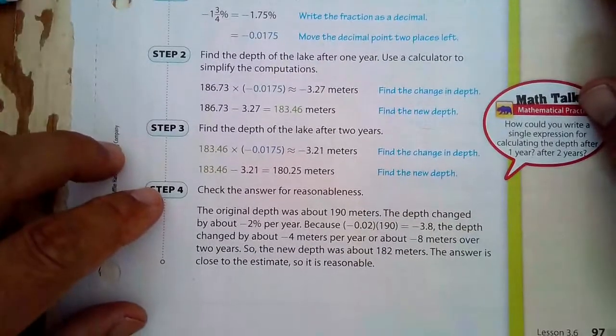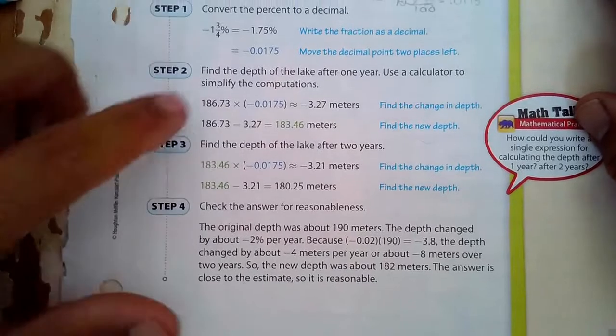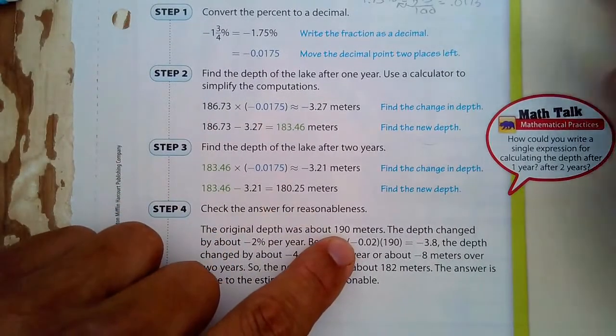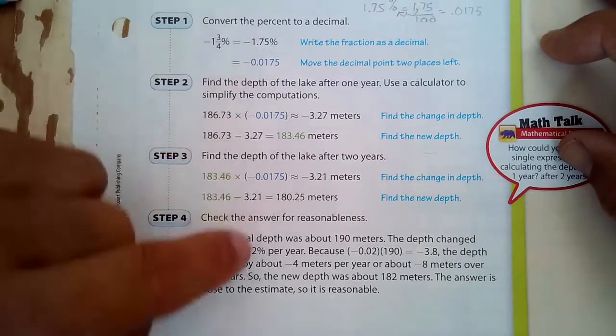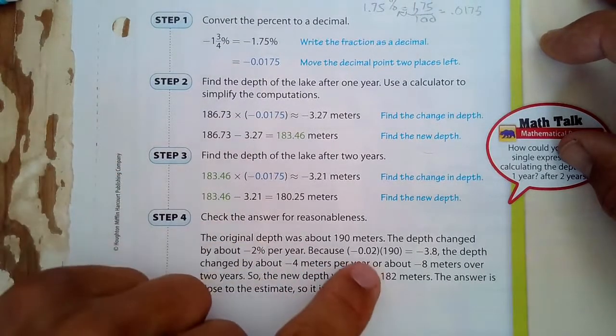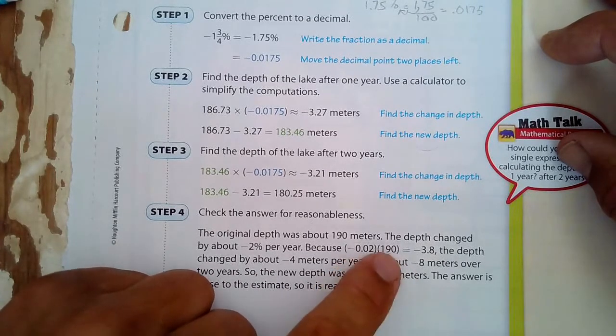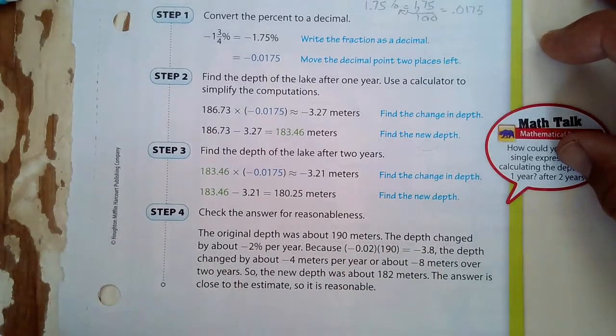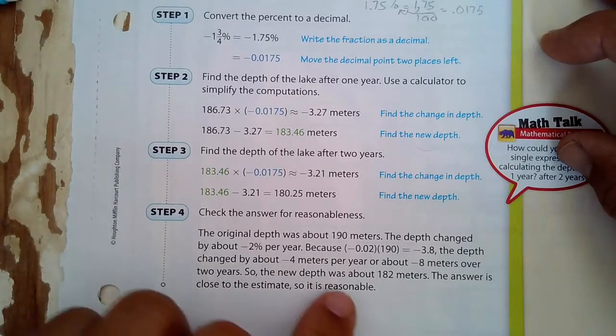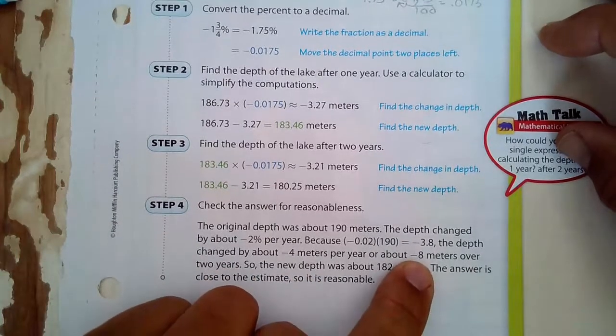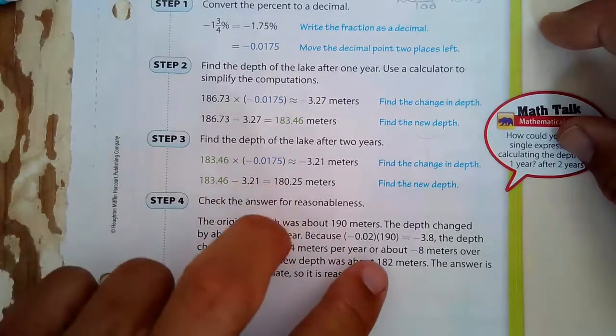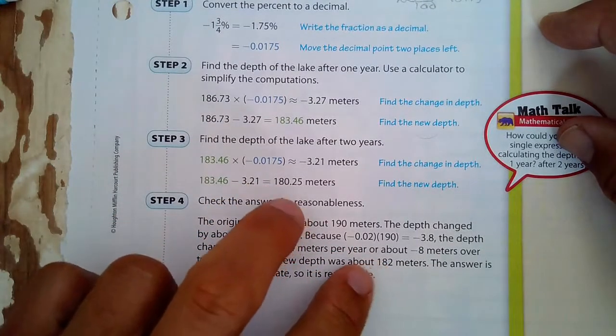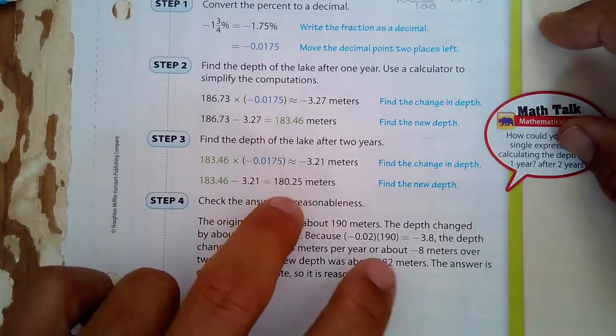So check your answer for reasonableness. We're going to be rounding numbers here. Instead of 186.73, we're going to call it 190 because it's easier to work with. And it changed about 2% because 1.75, that's pretty close. It's closer to 2% than 1%. And 2% of 190, 0.02 times 190 is 3.8, and that's about 4 meters per year. So if you change that by 4 meters each year for two years, that's a change of 8 meters. So 190 minus 8 is 182. And our answer was 180. The estimate and the actual answer are pretty close. So it sounds like it's right.